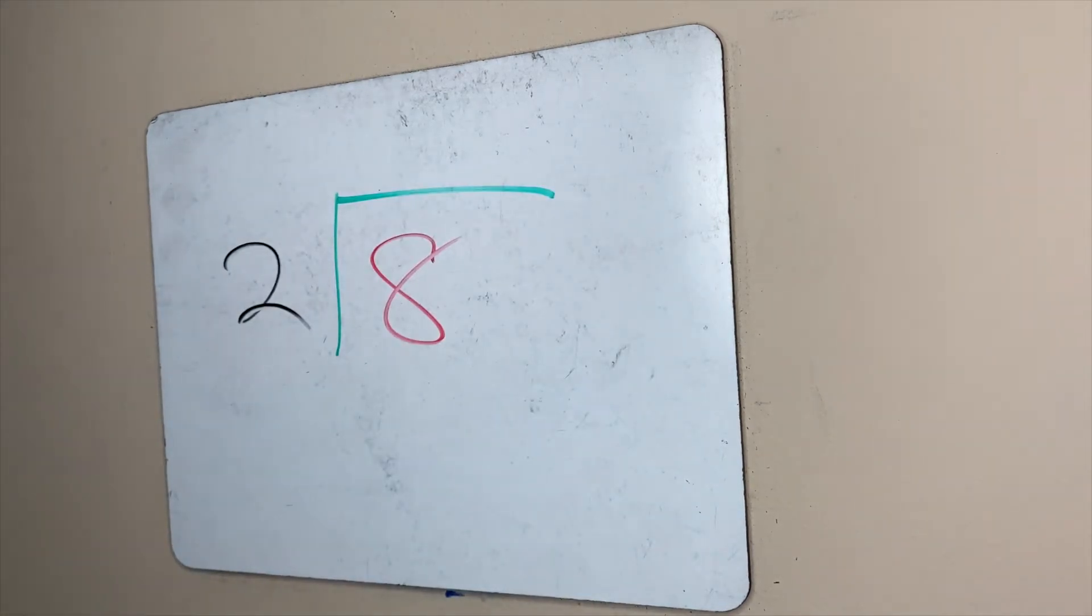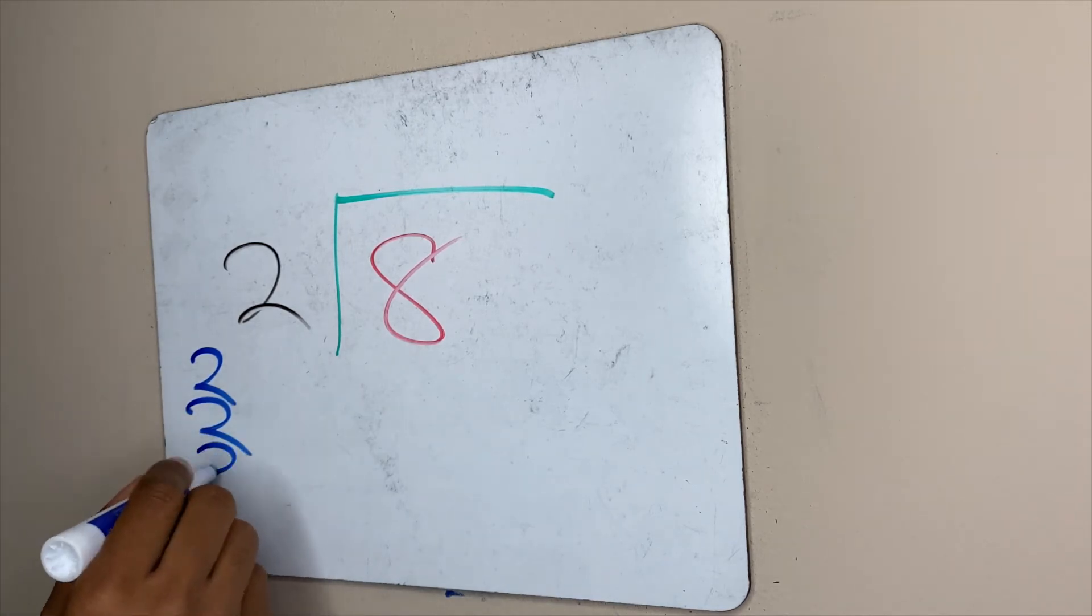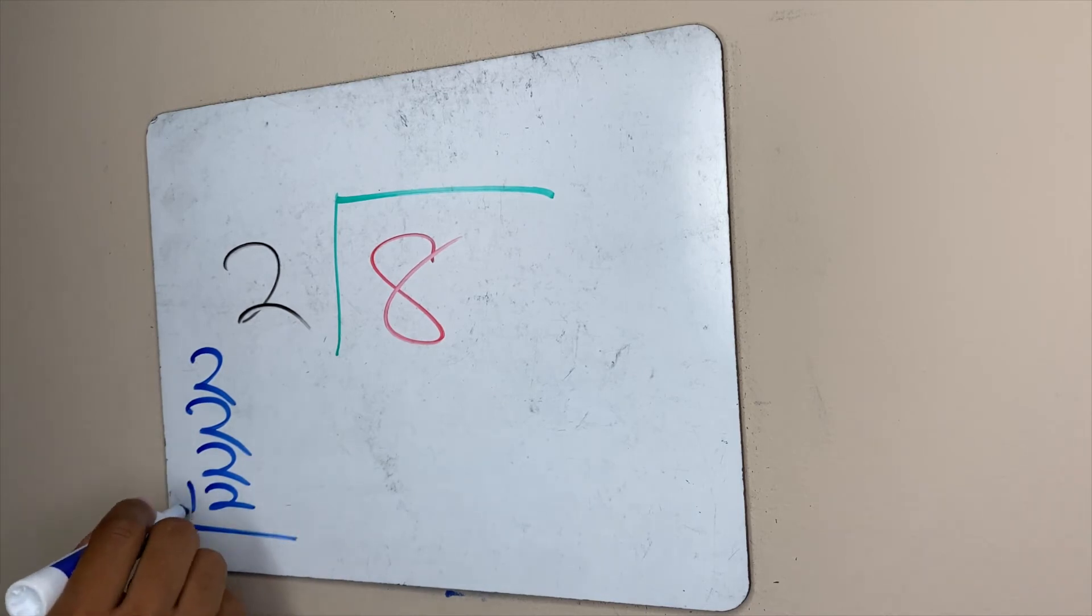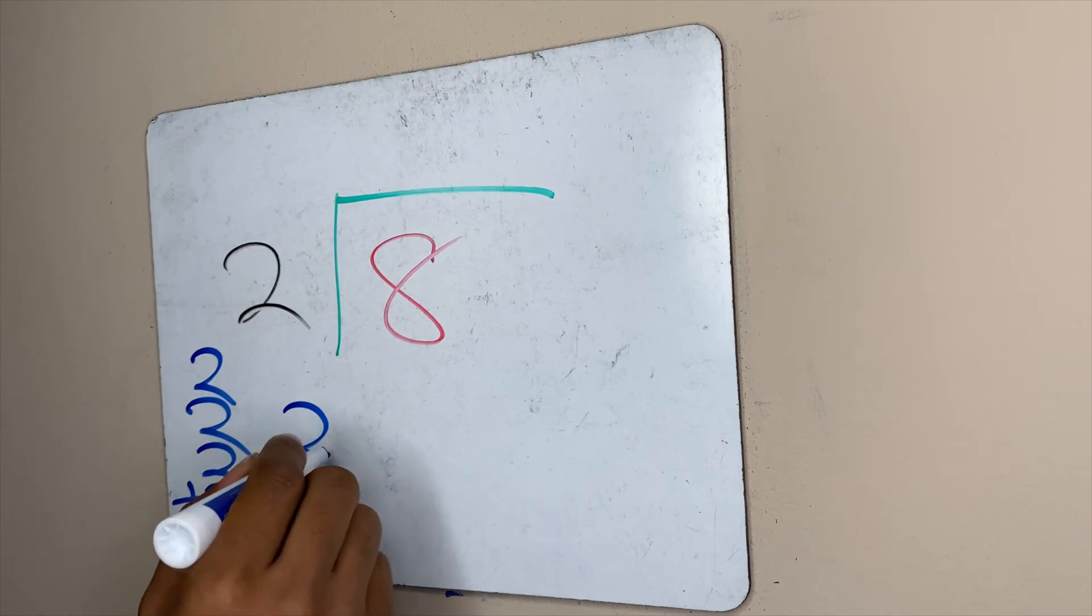So the first thing we need to do is see how many twos can fit into eight. We got two, obviously not enough. We add another two that's four, we add another two that's six and guess what this last two gives us when we add it? That's eight. This is also the same thing as two times four which equals eight.